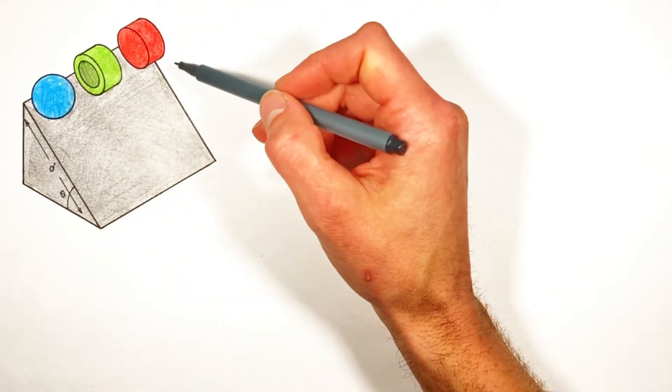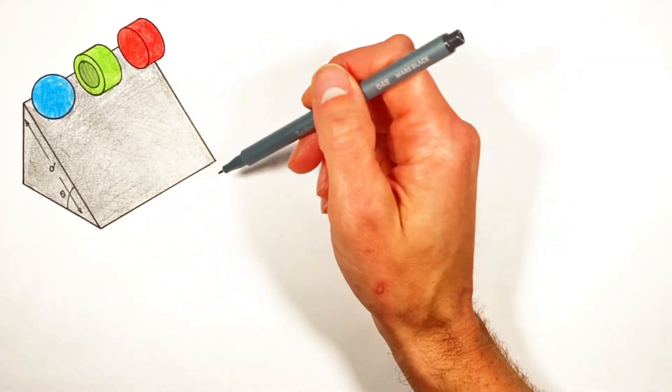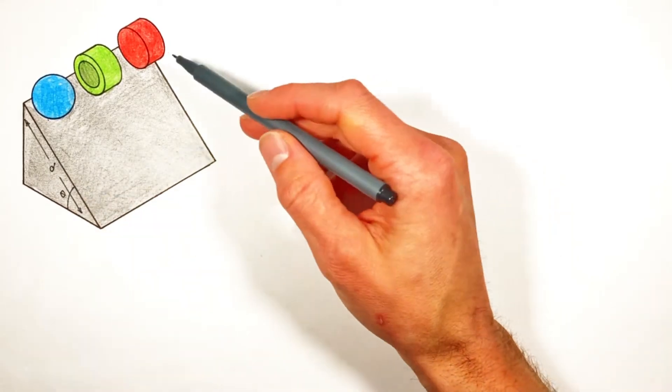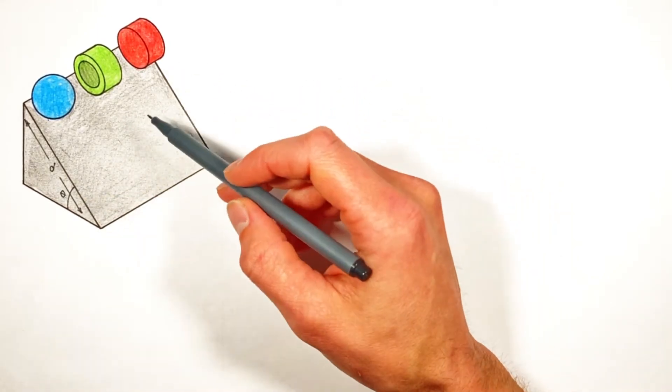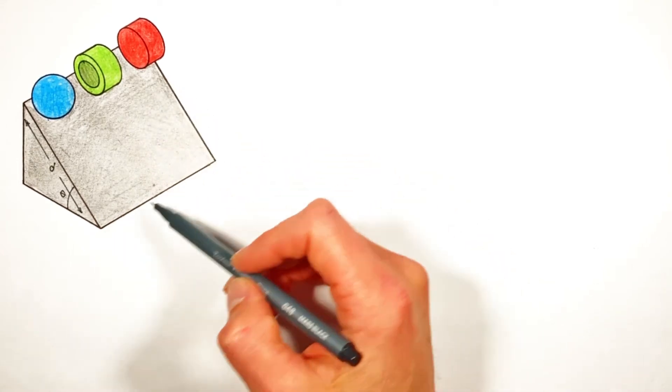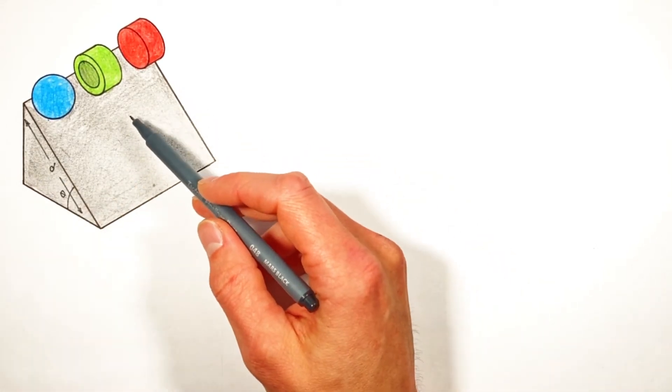In this problem, we're going to solve for the acceleration of each of these three objects down the hill. Now, I'm going to be honest with you, I've got a real problem with how most people teach this, and that is exclusively using force. So today what I want to do is go through and explain this problem multiple ways.